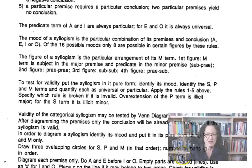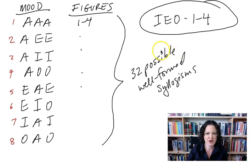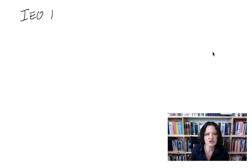Now let's go back to the iPad where we left off. We had the eight moods, and we're going to put them into figures 1 through 4. I'm going to show you how to do that with IEO — a mood that is never valid — and I'll show you why. So I hope you have this written down. I'm going to clear the iPad and do IEO.